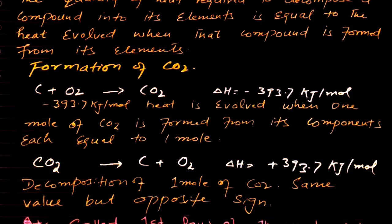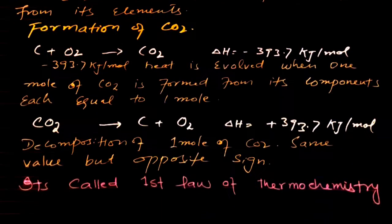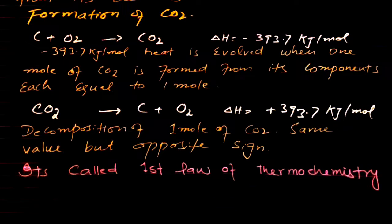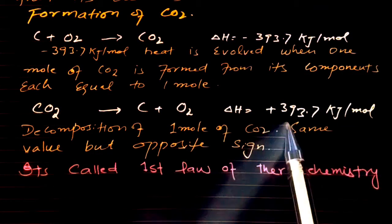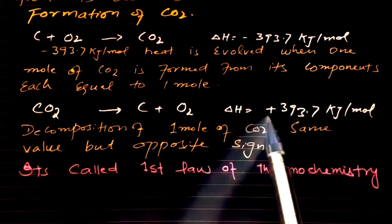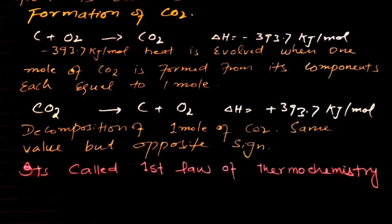Now, for the breaking of carbon dioxide, if you want to break the carbon dioxide into its individual components, the breaking will require this amount of energy, and that is +393.7 kJ per mole. There is a positive sign, but in case of formation the sign was negative. So both the energies are same but the sign is opposite.